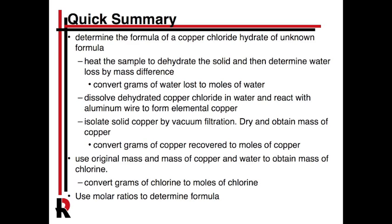You'll be able to get moles of water from that water loss. Then you're going to re-dissolve the salt in water and react it with aluminum wire in a chemical reaction that forms elemental copper — solid copper. You'll isolate that copper by vacuum filtration, let it dry, and get the mass of the copper. Everything else you'll assume was chlorine, so you'll subtract the grams of water loss and grams of copper from the original mass to get the mass of chlorine. Using those ratios, you should be able to stoichiometrically figure out a realistic formula for this compound.